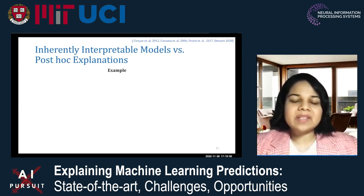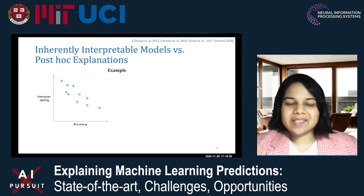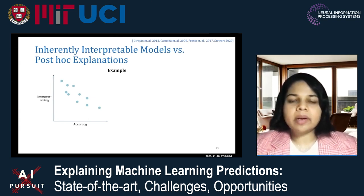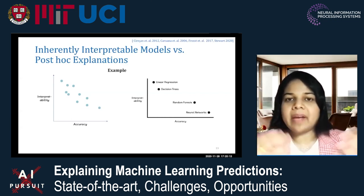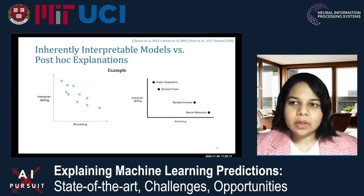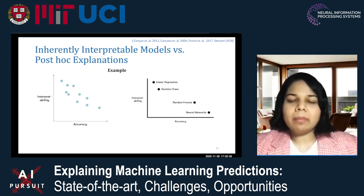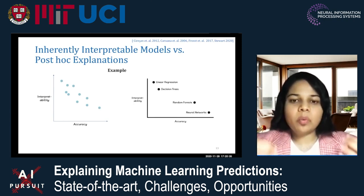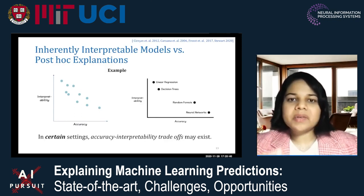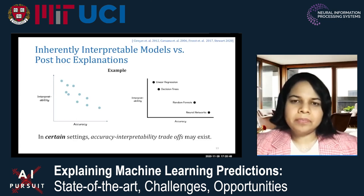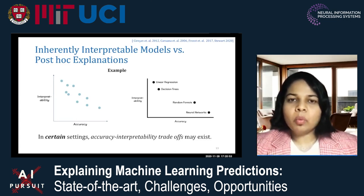The next big question is when to use which approach — when to go for inherently interpretable models versus post-hoc explanations. Consider a setting where accuracy-interpretability tradeoffs exist. As we make our models more complex, we get higher predictive accuracy. For example, linear regression or decision trees may take an accuracy hit, while more complex models like random forests or deep neural networks achieve higher predictive accuracy. These patterns are commonly observed in settings like image recognition. In those cases, we might not want to sacrifice accuracy for interpretability, and we may want to rely upon post-hoc explanations.